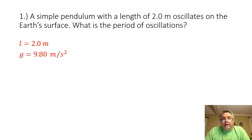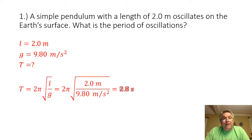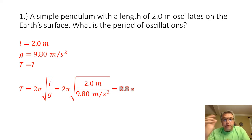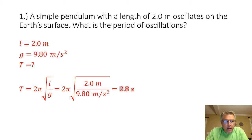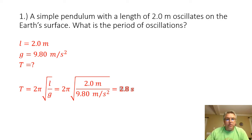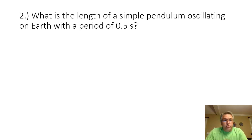We are being asked to find the period of the pendulum. The formula for the period of a pendulum is T equals 2π times the square root of L over g. I'm solving for the period so I don't need to rearrange — I just plug in my known values: length of 2 meters and gravitational acceleration. Working out the math gives a period of 2.8 seconds.